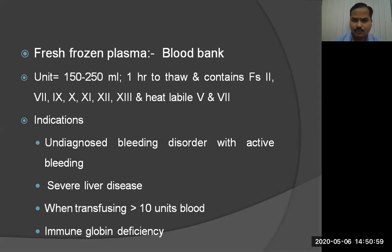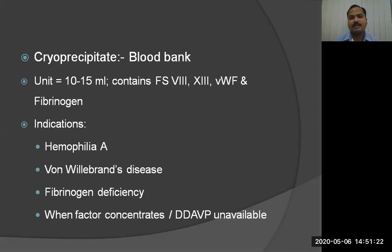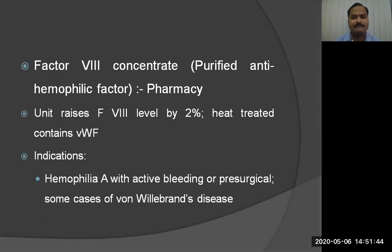FFP is useful for undiagnosed bleeding disorders with active bleeding, severe liver disease, when transfusing more than 10 units of blood, and in immunoglobulin deficiency. Cryoprecipitate is available in units of 10–15 ml and contains factors 8, 13, von Willebrand factor, and fibrinogen; it is indicated in hemophilia A, von Willebrand disease, fibrinogen deficiency, and when factor concentrates are unavailable. Factor 8 concentrate (purified anti-hemophilic factor) is available in pharmacy; each unit raises the factor 8 level by 2%, and heat-treated preparations also contain von Willebrand factor.